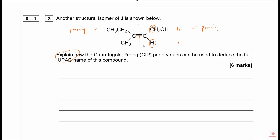On the left-hand side it's trickier because we have a carbon bonded to a carbon - the C of the CH₂ and another carbon. So we look one further bond away. In this case, the next bond is to a hydrogen here, and we've got another carbon there. That carbon has atomic number 12 whereas the hydrogen bonded here is only 1, so this is our priority portion.